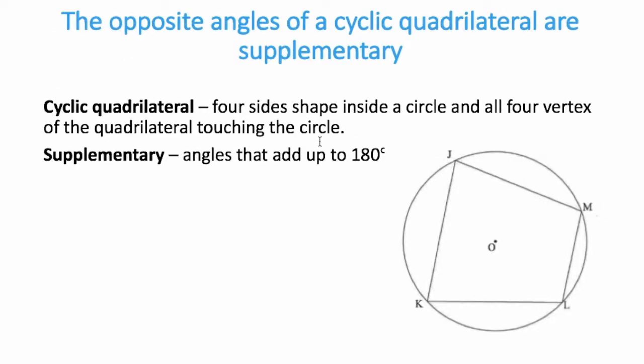We are going to look at the terminology. The term cyclic quadrilateral means that you have a circle and a quadrilateral is a four-sided shape that is inside the circle. Now what is important about the quadrilateral is that the vertices of the quadrilateral must touch the circumference of the circle, all four vertices of the quadrilateral.